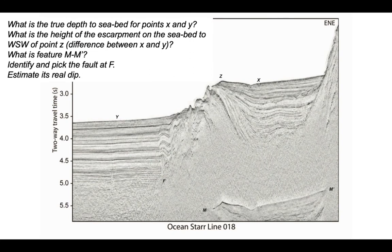The Ocean Star line has been useful for allowing us to determine bathymetry and its variations across the profile, and to work out the heights of escarpments on the seabed. We've identified a multiple, and we've looked at the orientation of a fault plane and estimated its real dip.